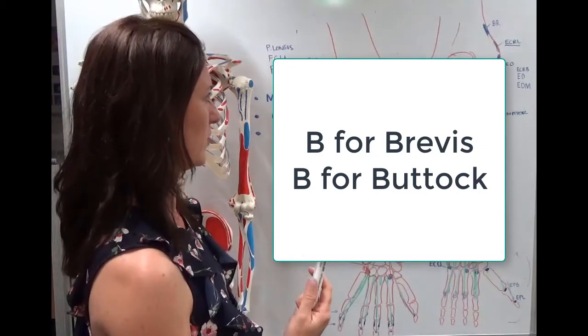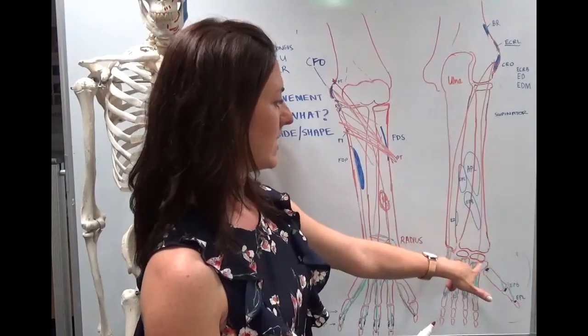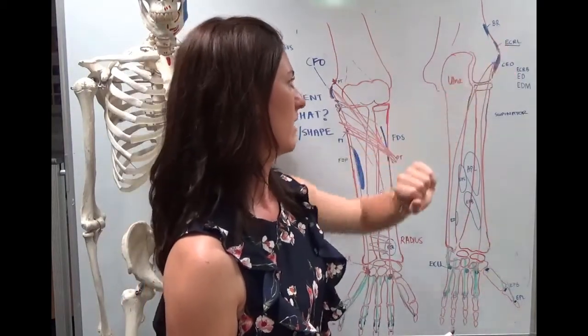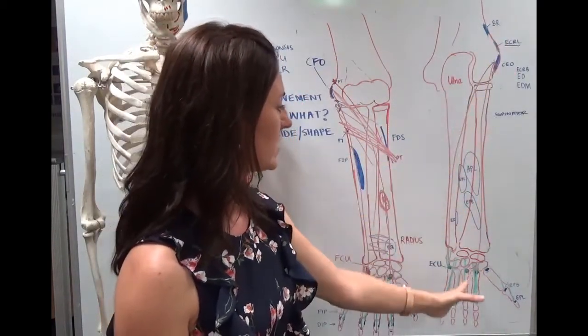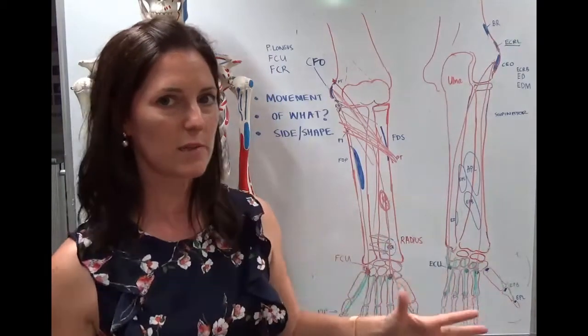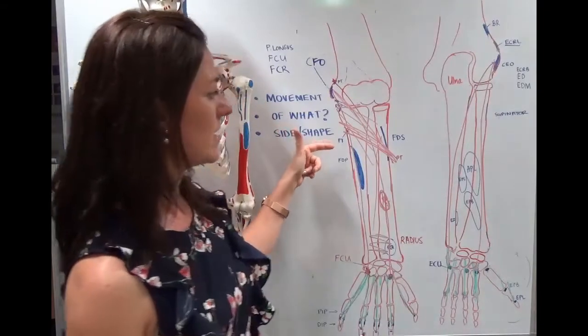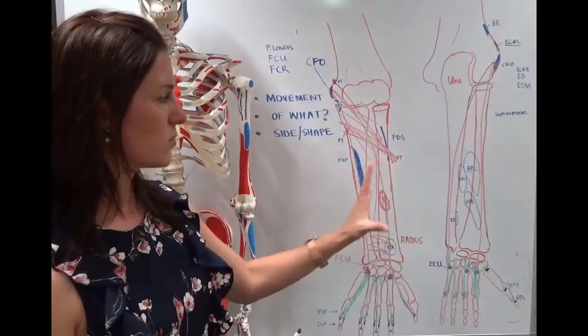That's how you can remember it. So, so far we've covered the two extensor carpi tendons, well three, because I've just told you about the longus. And in the middle, the extensor digitorum is just a nice simple extensor digitorum. There's no third word in this case, because there is no deeper layer, there's just one.